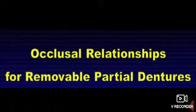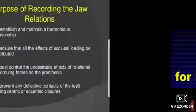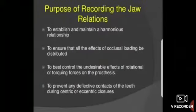As-salamu alaykum wa rahmatullahu wa barakatuh. In this session, we talk about occlusal relationship for removable partial denture. The first thing we need to know is the purpose of recording jaw relation: to establish and maintain harmonious relationship, to ensure that all the effects of occlusal loading are distributed, to control the undesirable effects of rotational or torquing forces on the prosthesis, and to prevent any deflective contact of the teeth during centric or eccentric closure.